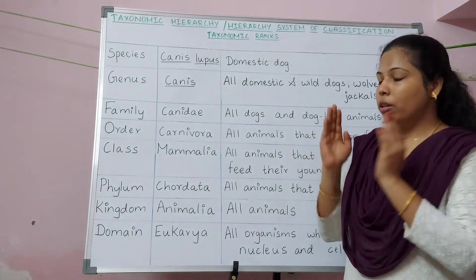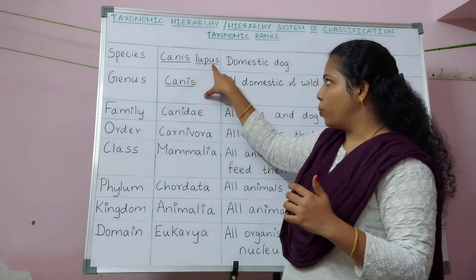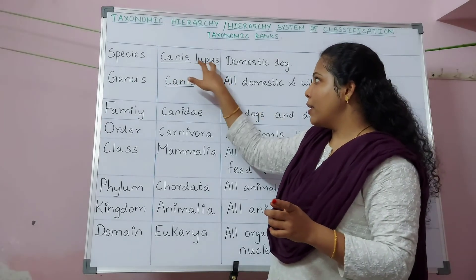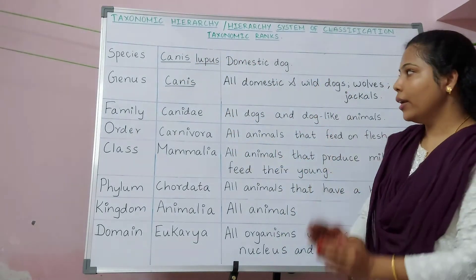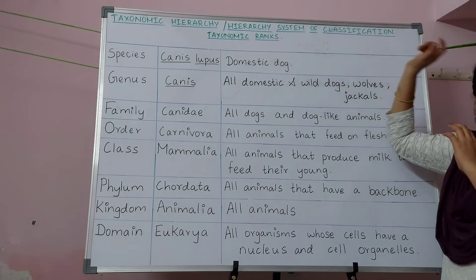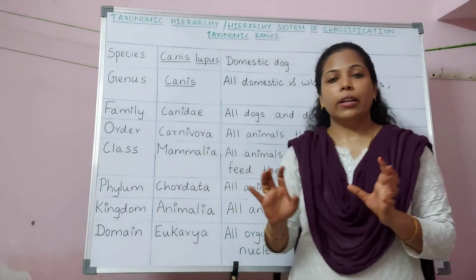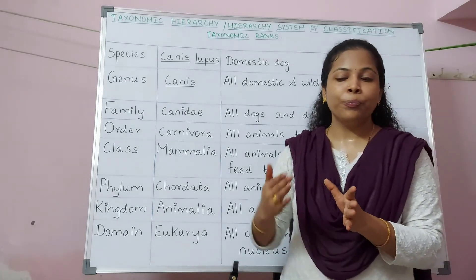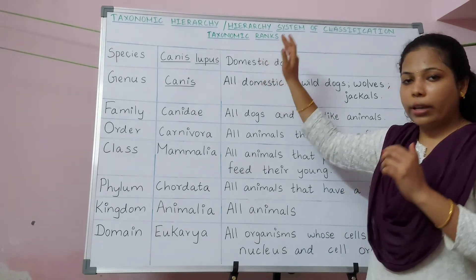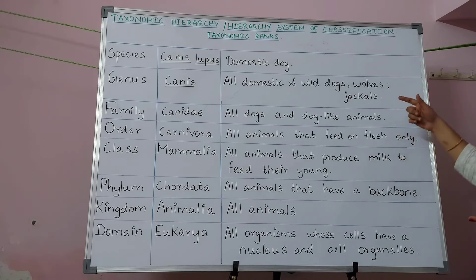The species Canis lupus — here 'lupus' is the species name. We are not supposed to write the species name alone; we always write it next to the genus name, so we write 'Canis lupus'. Canis is the genus name and lupus is the species name. Canis lupus includes only the domestic dog — we exclude wild dogs, wolves, or jackals here. This species includes animals that can reproduce among themselves.